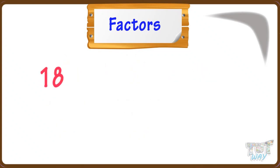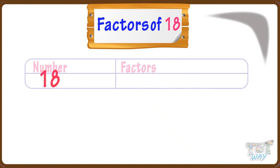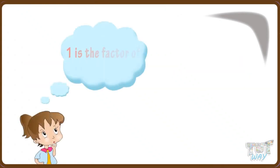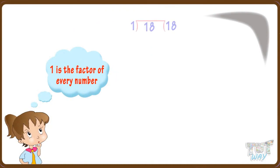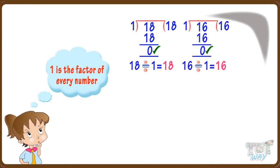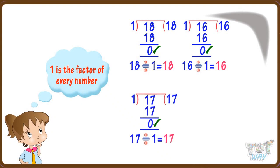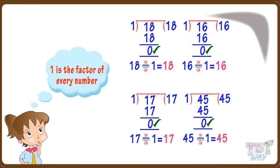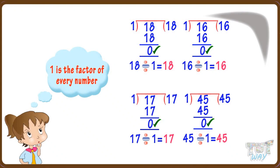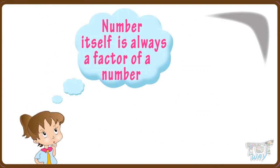Here we have a number — it's 18. Now let's see which numbers are factors of 18. Always remember, 1 is a factor of every number because 1 can divide any number: 18 ÷ 1 = 18, 16 ÷ 1 = 16, 17 ÷ 1 = 17, 45 ÷ 1 = 45. And the same is for the number itself — the number itself is always a factor.